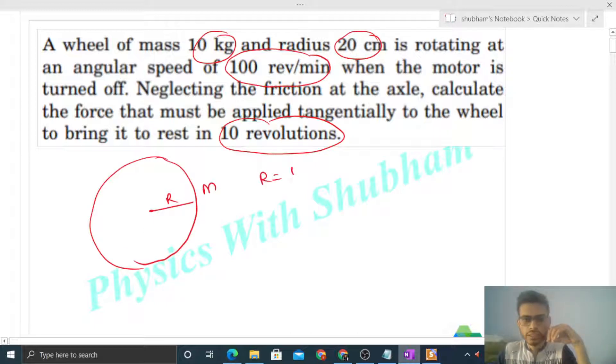So it's a hammer passing wheel. Radius is given and mass is also given. Radius is 1/5 meter and mass is 10 kilogram. Initially it was rotating with 100 revolutions per minute. 100 revolutions means 2π radian, and per minute means 60 seconds. So this is the initial value of angular velocity.